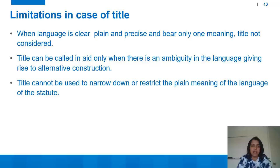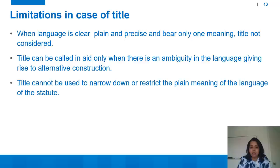Limitations while interpreting a statute with the help of title: Number one, when the language of the statute is clear, plain and precise and bears only one meaning, the title need not be considered. Second, the title can be called in aid only when there is an ambiguity in the language giving rise to alternative construction — so if words are ambiguous and lead to more than one meaning, the title can be used as an aid. Third, the title cannot be used to narrow down or restrict the plain meaning of the language of the statute.